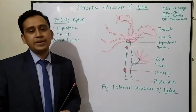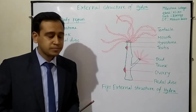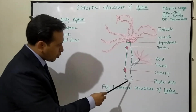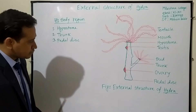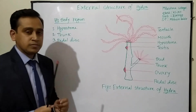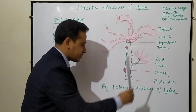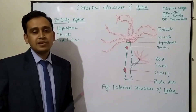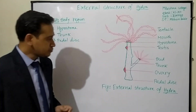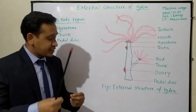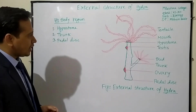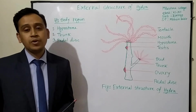The trunk also helps in locomotion by creating loops. The next region is the pedal disc. The proximal end of the body forms a disc-shaped slender stock called the pedal disc. The pedal disc secretes adhesive fluid for the attachment of the body, and also secretes bubbles for floating. This is the external structure of Hydra.